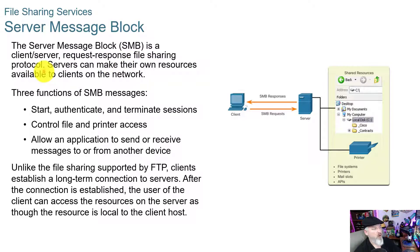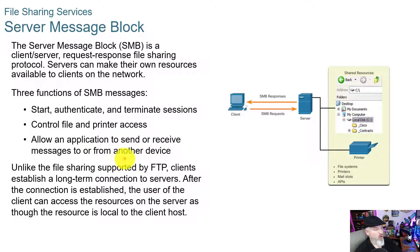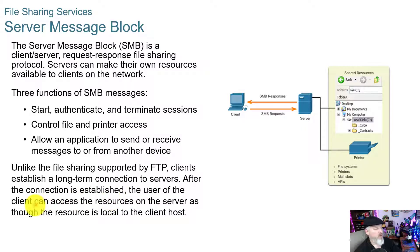Server Message Block — SMB — is a client-server request-response file sharing protocol. SMB messages have three functions: starts, authenticates, and terminates sessions; controls file and printer access; and allows an application to send or receive messages to or from another device. Unlike file sharing supported by FTP, SMB clients establish a long-term connection to the servers. After the connection is established, the user can access the resources on the server as though the resource is local to the client host.